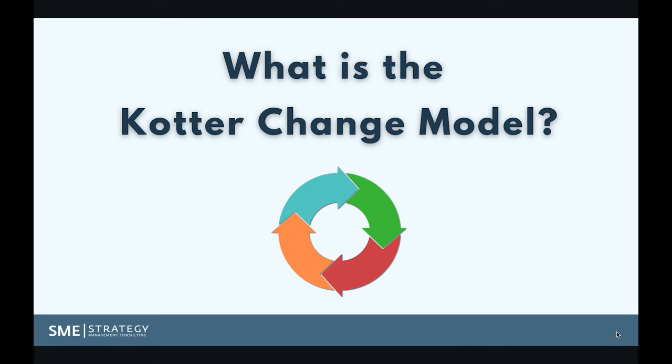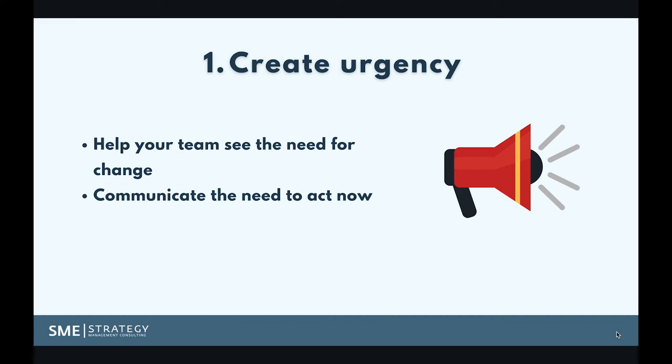I'm going to walk you through each of the steps of the model, and we're going to start at the start. Number one: create urgency. Anything that you want to create, it needs to be urgent enough to do. The benefit of the future needs to be greater than the pain of change. So if it's not urgent, if there isn't a reason to do it right now, then why should you do it? So as an organization or as a leader, you need to either manufacture urgency or highlight the urgency of any change initiative.